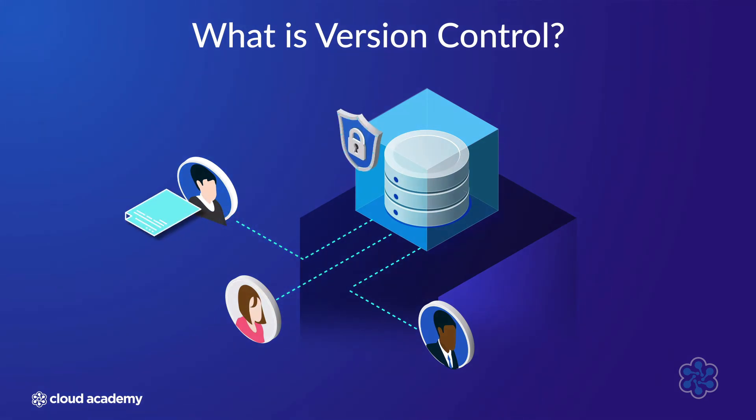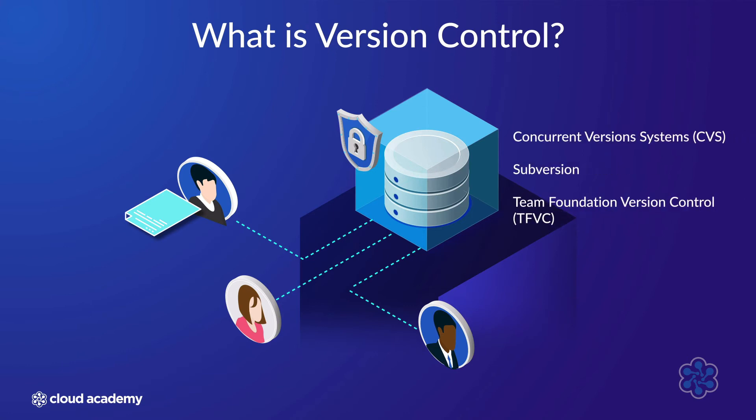While a file is checked out, it is locked within the version control system, preventing anyone else from making changes to it. This type of version control was very much in vogue at the beginning of the century, represented by well-known products like CVS (Concurrent Version Systems), Subversion, and Team Foundation Server, which morphed into Team Foundation Version Control, abbreviated to TFVC.